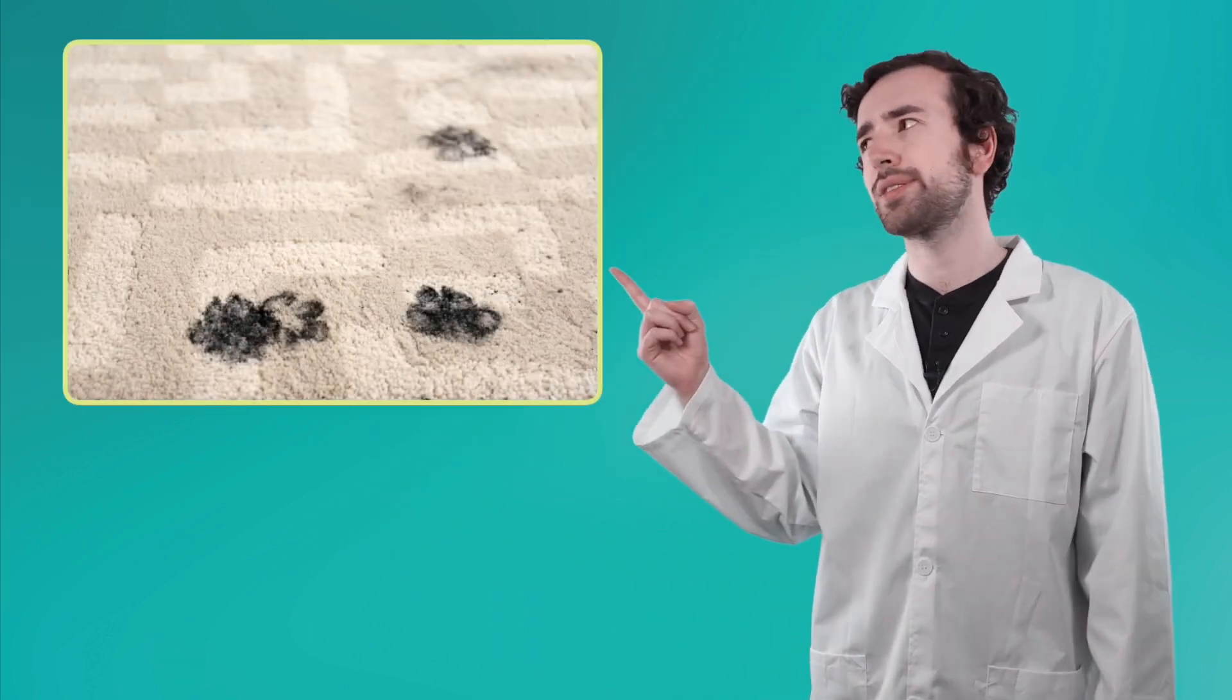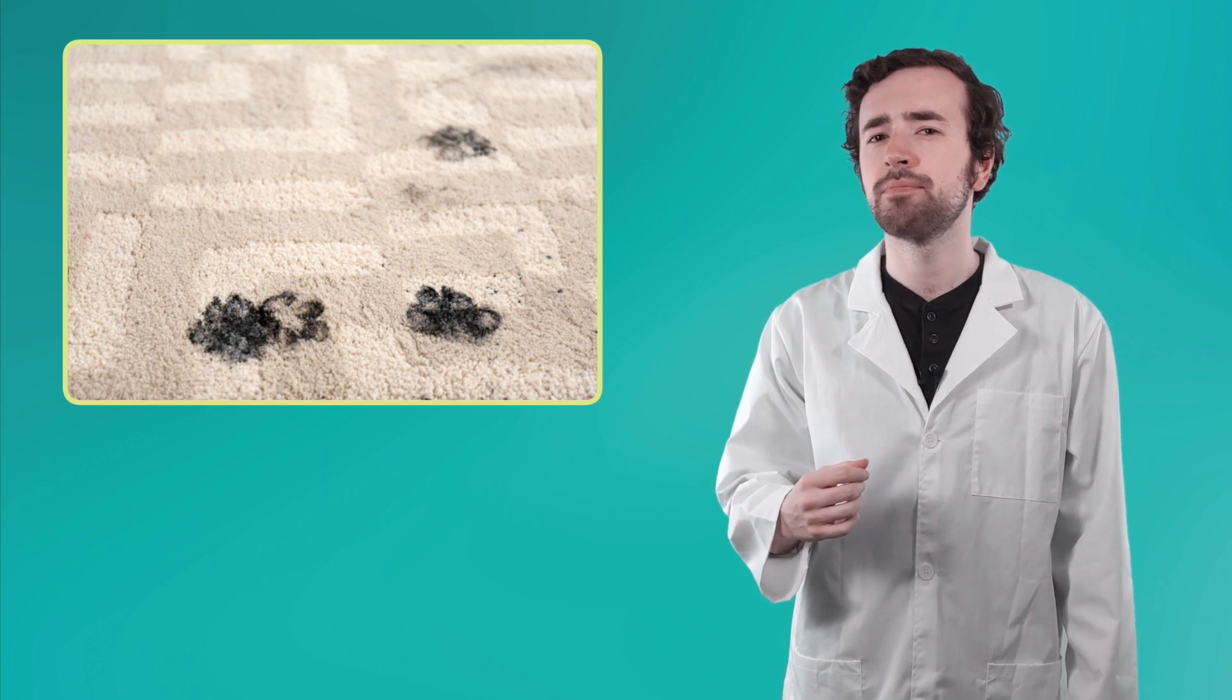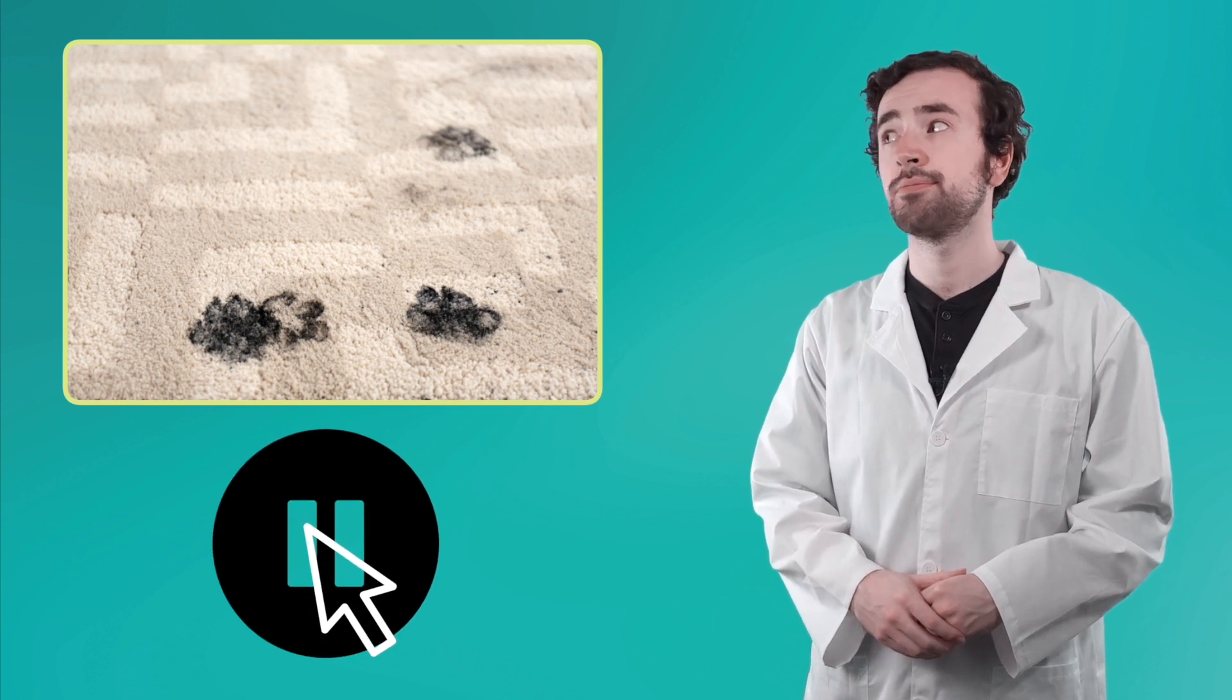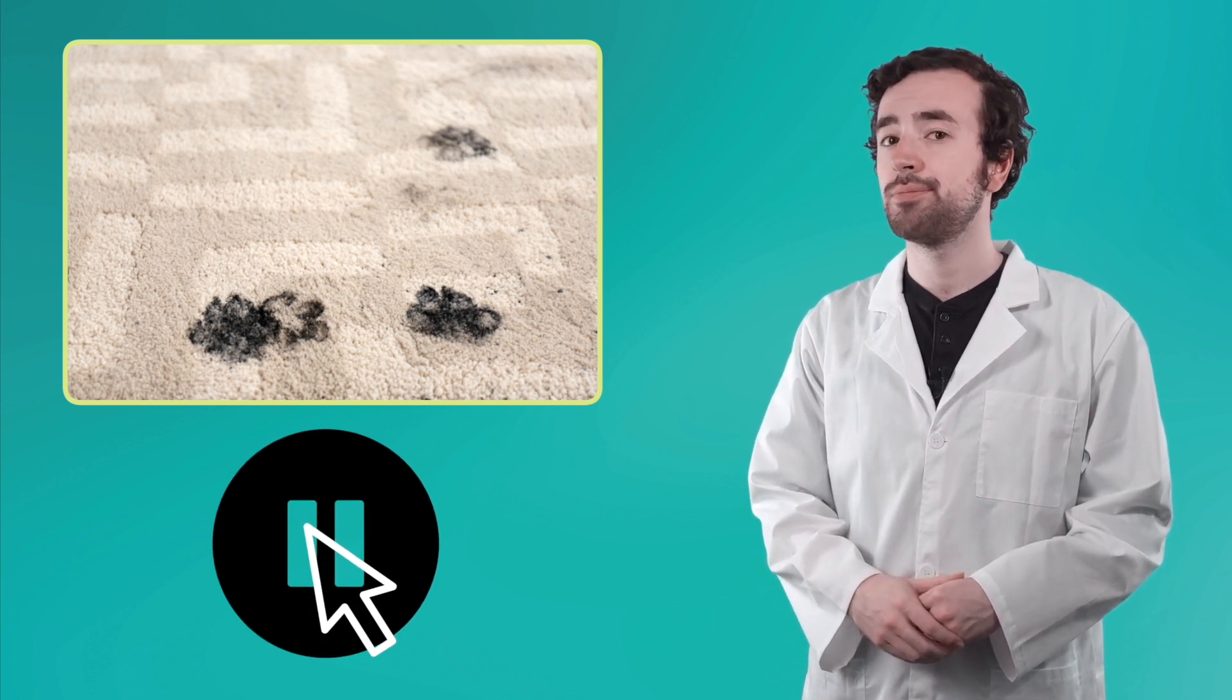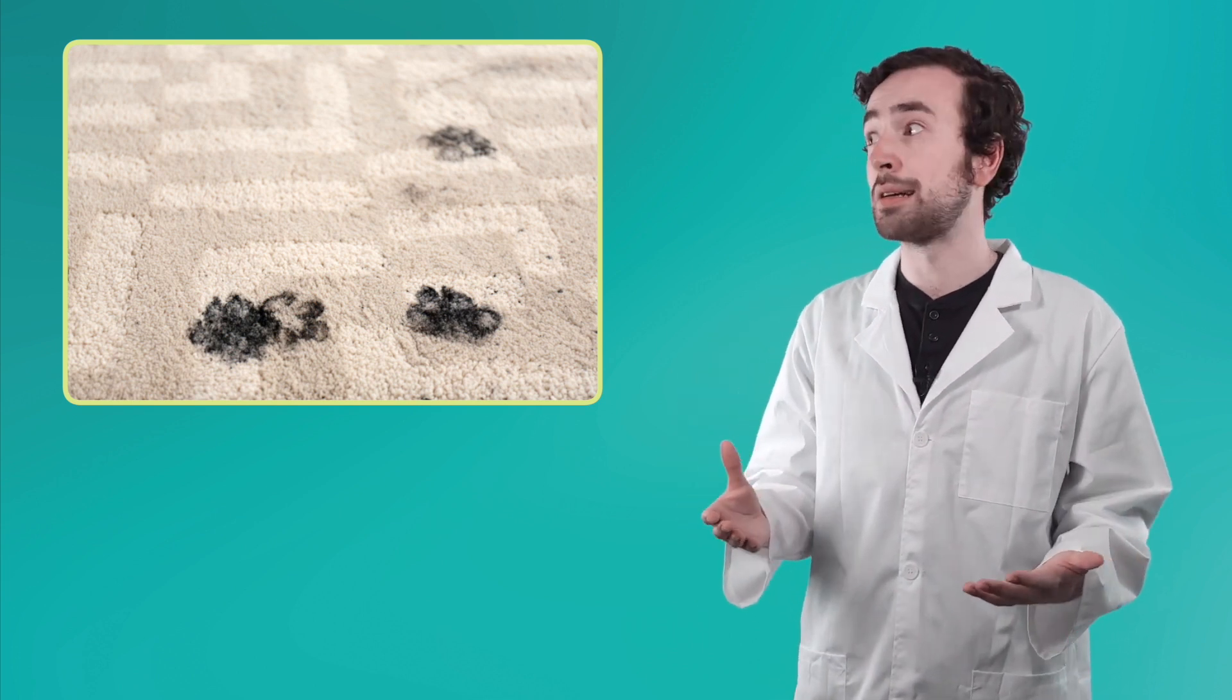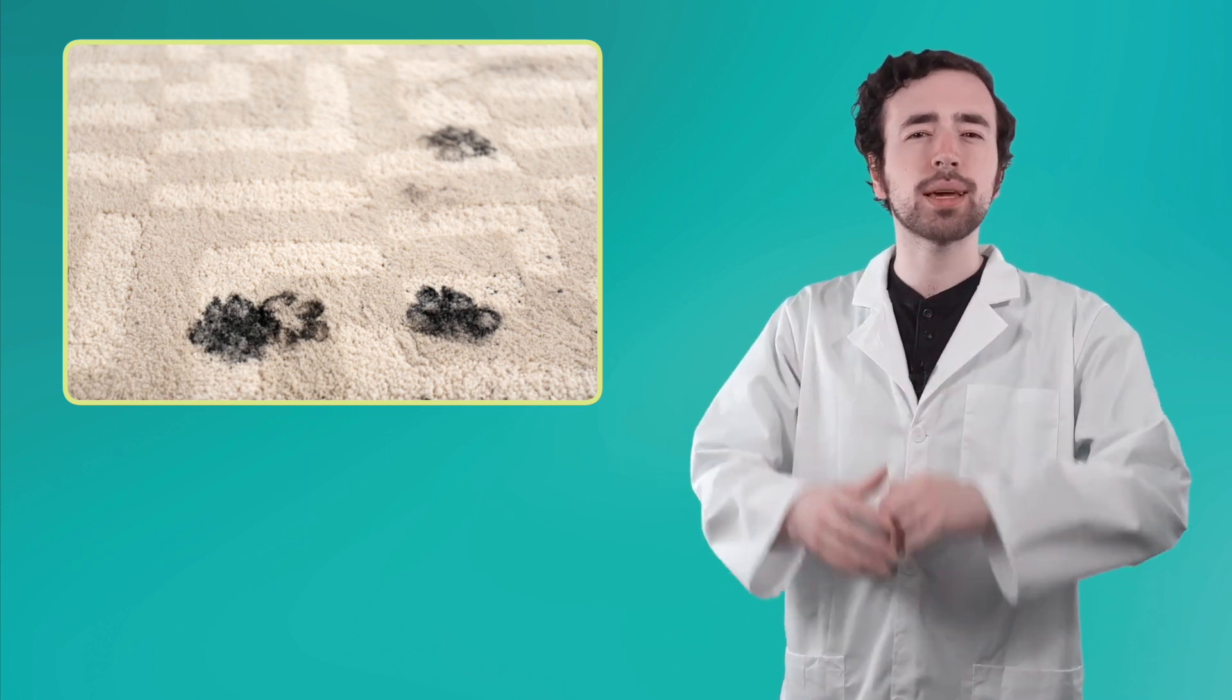You know, I made some important observations today. Imagine coming home to this scene, like I did. What would you observe here? Pause the video now to jot down your observations in your guided notes. So what did you come up with? You might have observed that this carpet's got some stains on it. Or maybe that the stains are shaped like little paw prints. What if I also told you that I have a cat named Lucy who was home at the time of the incident?